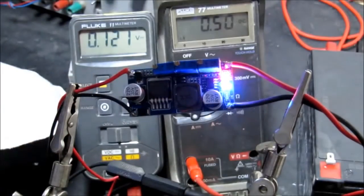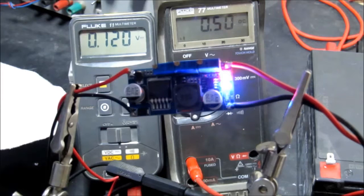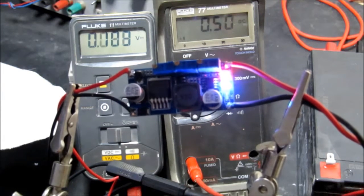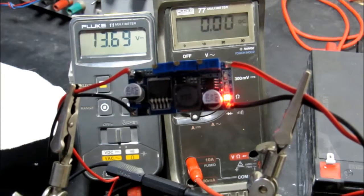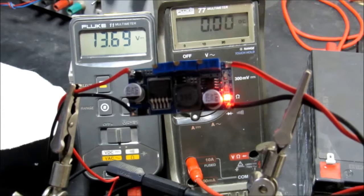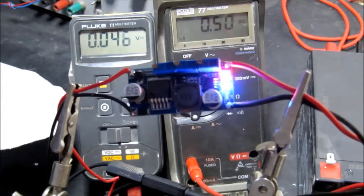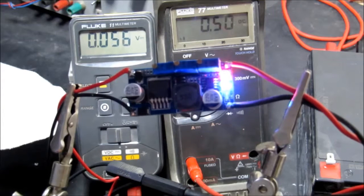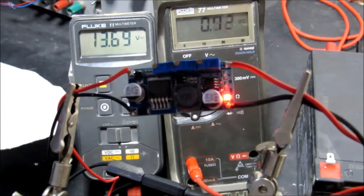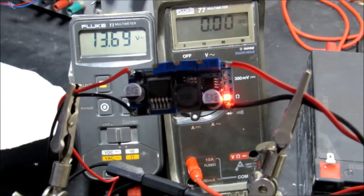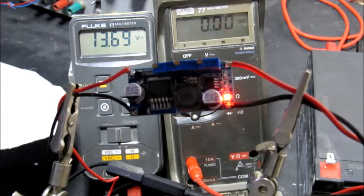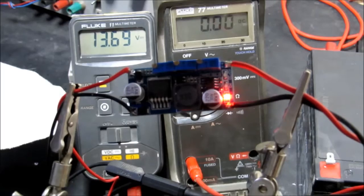So there we have our half an amp output. If we now remove the meter from the circuit, you can see our voltage is set to 13.7, and our output current is limited to half an amp. So in a real world scenario now, let's just connect this to the battery.